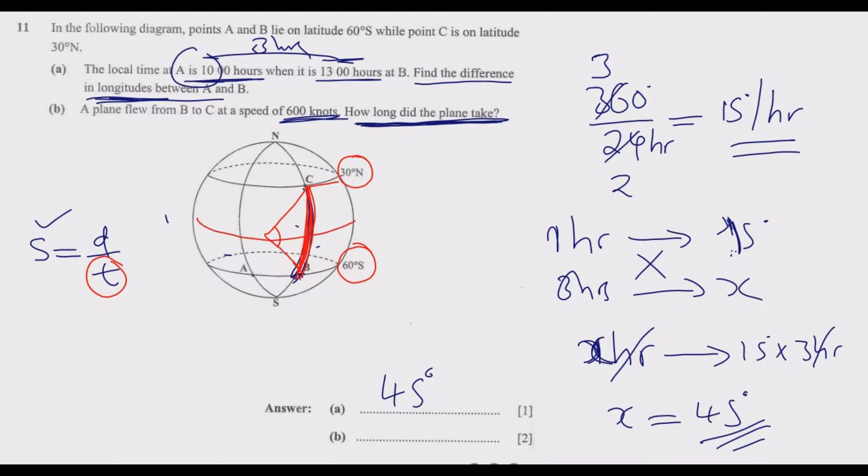If this is the equator, from here to here is 30°, then this is 60°. To find the difference, we add 30° plus 60°, which gives us 90°. If latitudes are on the same hemisphere, you subtract the smaller from the biggest. If they are in different hemispheres, you add to find that angle.